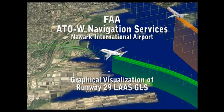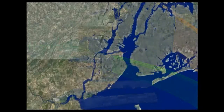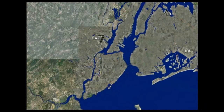This is the GLS approach to Runway 29 at Newark Liberty International Airport. The plan view illustrates the New York Class B terminal airspace, showing the close proximity of the two other principal airports, LaGuardia and JFK.